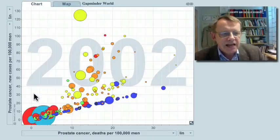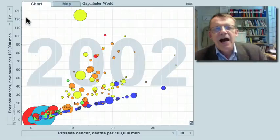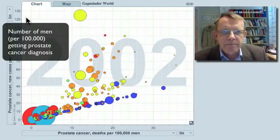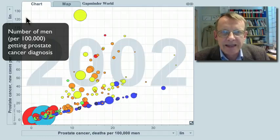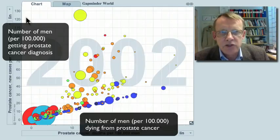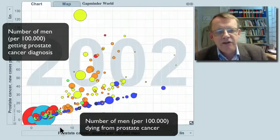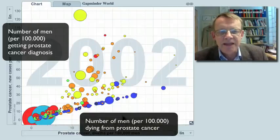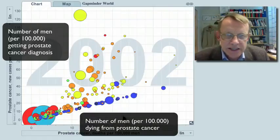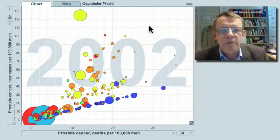Look at this graph. Here I have on this axis the number of men getting prostate cancer diagnosis per 100,000, and on this axis the number of men dying from this disease. The size of the bubbles now correspond to the population size.